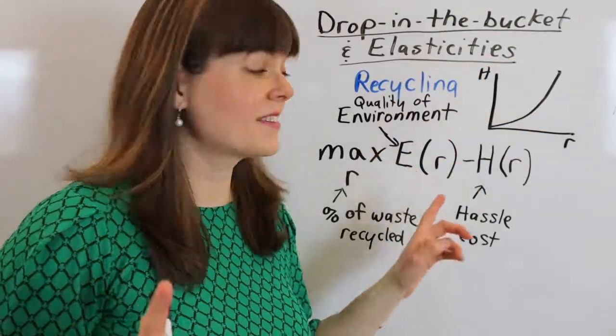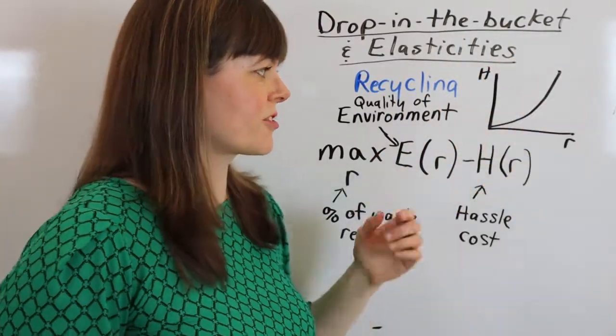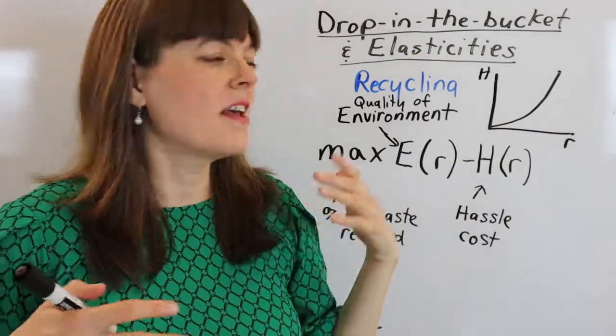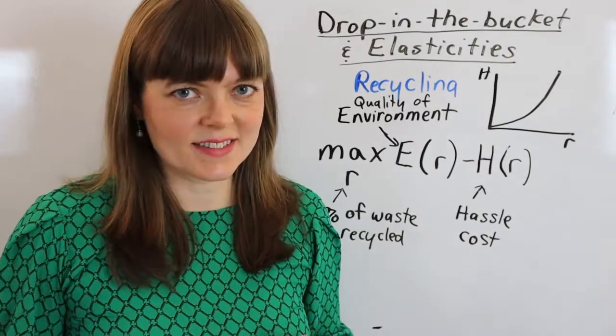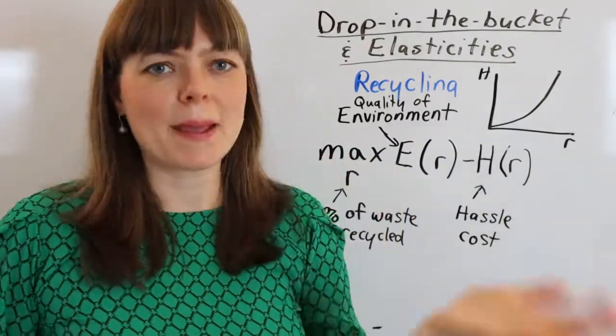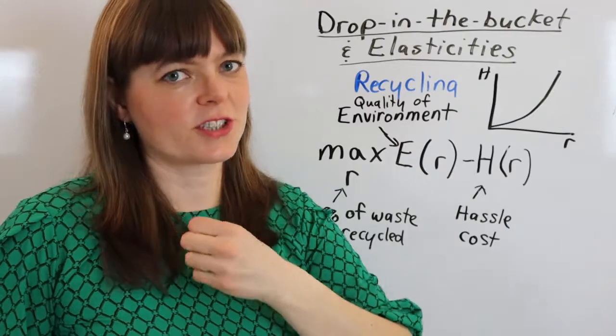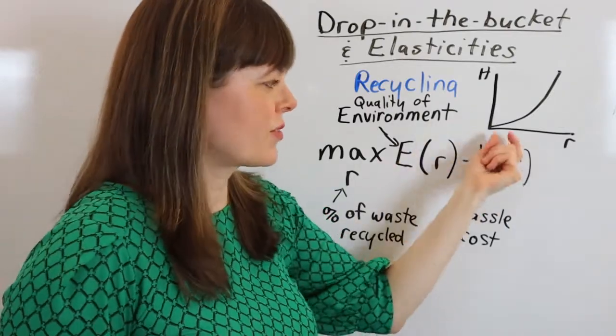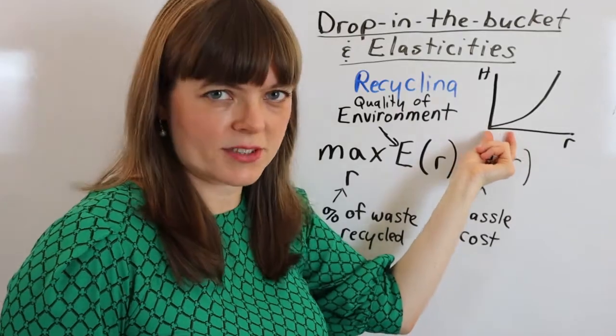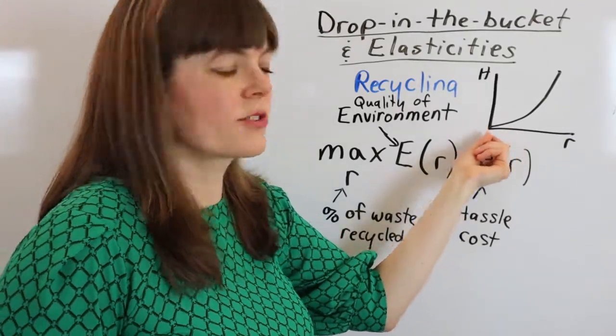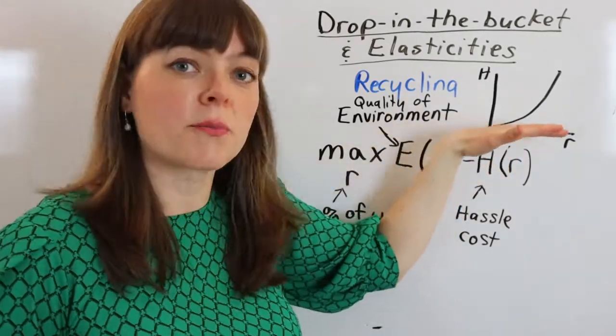The reason our hassle function has this increasing marginal cost shape is because you're going to recycle the easiest things to recycle first. Your cans, your aluminum cans, your papers, everything that you can just throw in the recycling bin, you're going to recycle that first. And so the first 10 or 20 percent of your trash that you recycle is going to be fairly easy, low marginal cost.